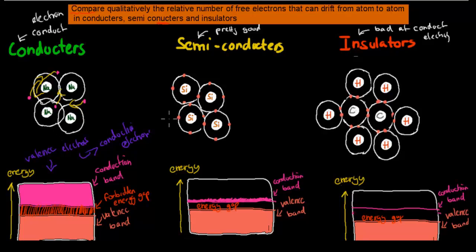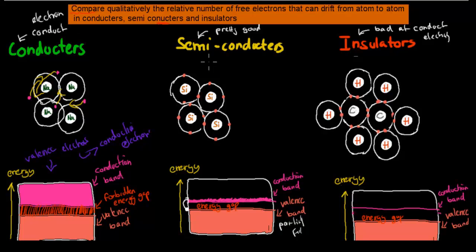For semiconductors, we have some electrons that will have enough energy. The band is a bit different — we have the valence band partially filled, meaning it's almost full but not quite. The reason it's not full is because some electrons in the higher energy range will have had enough energy to jump that gap and become conduction band electrons, meaning some electrons won't be in their original position — they're floating around and conducting electricity.